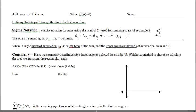Where k is the index of summation — sometimes we see i, sometimes lowercase j — it just helps us count. Down here we say k equals 1, where 1 represents the first rectangle, going to an upper limit of the nth rectangle. So we have the sum from k equals 1 to n of a-sub-k.